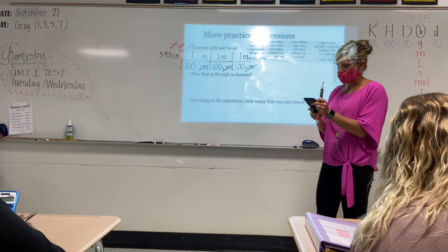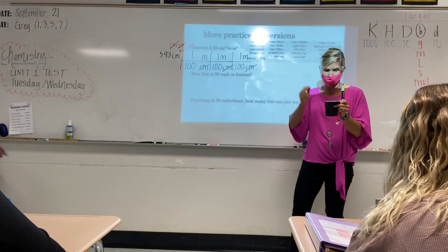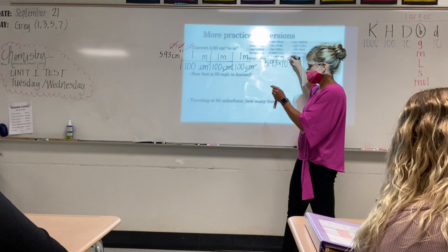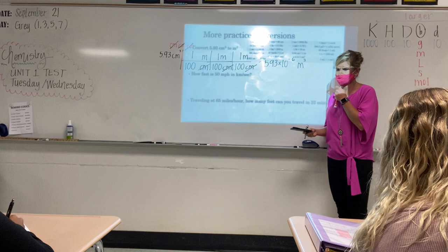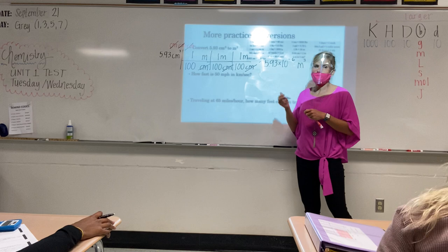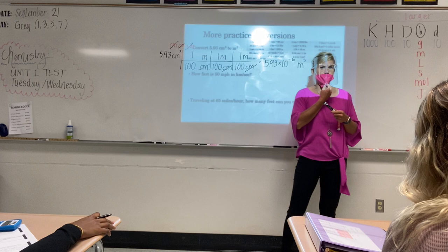So we'll do 5.93 — every time you see something on the bottom, push divide again: divide by 100, divide by 100, divide by 100. You should get 5.93 times 10 to the negative 6 meters cubed.